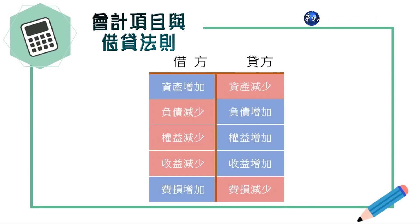这个部分非常重要，同学可以从这边做记录。属于借方的科目就是资产和费用（费损）这两个。费用增加属于借方科目，所以两个借方科目：一个是资产，一个是费用。剩下三个要素——负债、权益、收益（收入）都属于贷方科目。如果同学对这部分没有问题，我们就来看例子，用例子说明会更清楚。